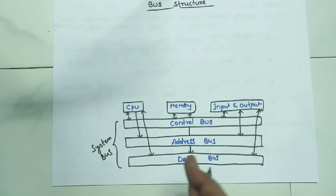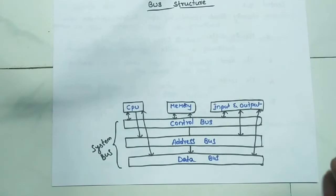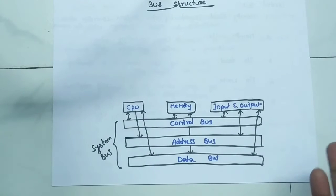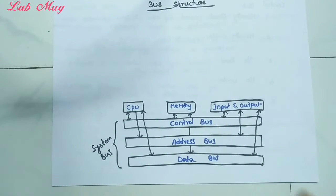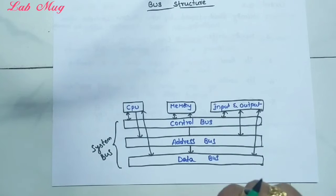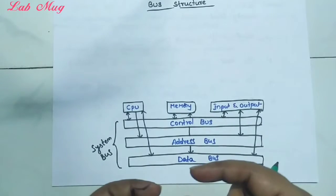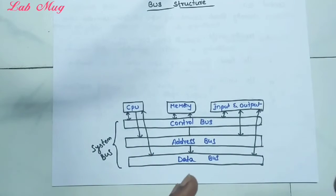Hi students. In computer organization and architecture, the next topic is bus structure. Bus structure is a very very important and useful topic. First of all, bus structure - if we understand this general purpose architecture, we can easily understand the remaining architectures. So first of all, what is bus structure? The terminology - what is a bus? Bus means some multiple options are connected with a single line or single wire.